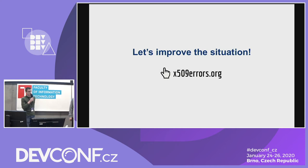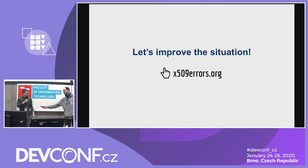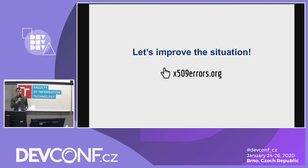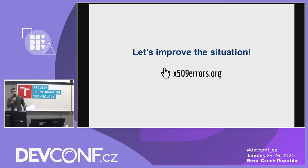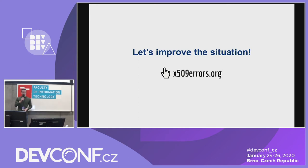We don't want to just keep complaining, so we decided why not improve the situation and make it more usable. The obvious way would be to make pull requests to the official documentations, adding missing documentation. We agreed that's the obvious way, but we decided on a slightly different approach. You may have seen our booth here at DevConf. We have created a website called x509errors.org.